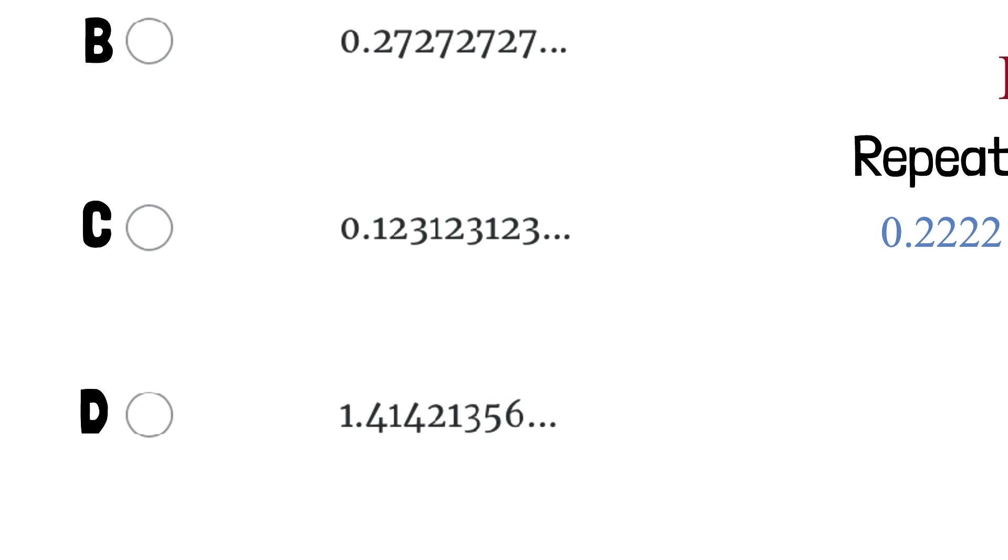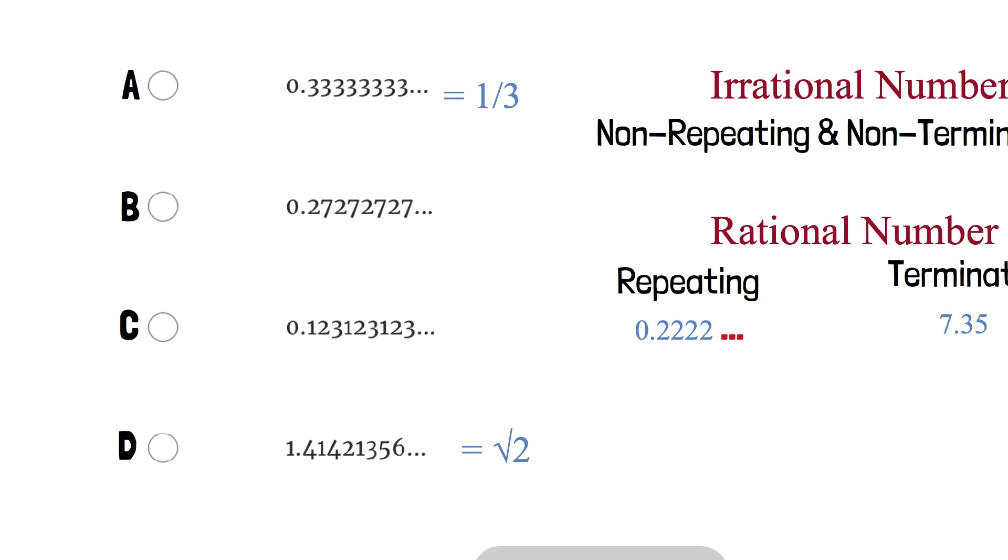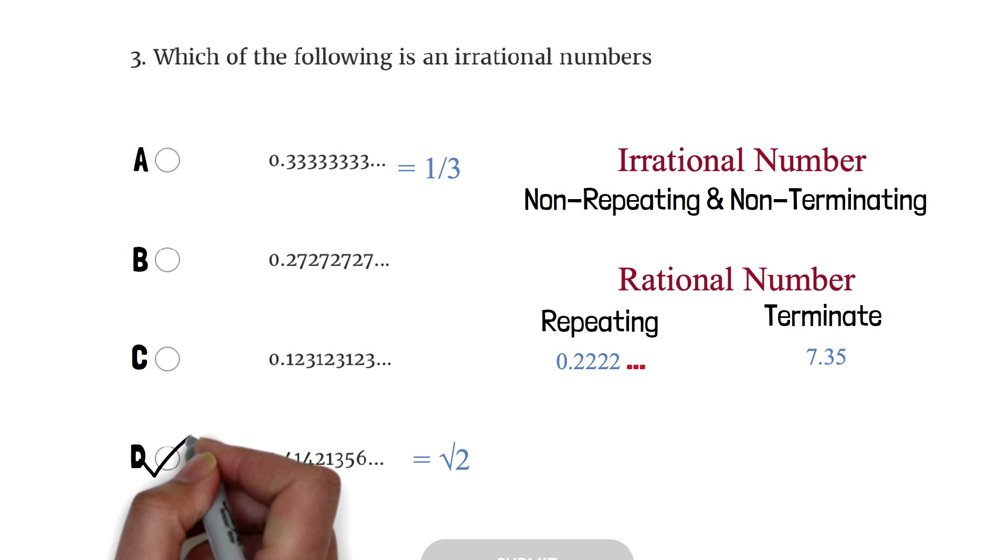For the last one, when we look at the decimals, we have 4, 1, 4, 2, 3, 5, 6, and so on. The numbers are not repeating in any orderly form, so we say it's non-repeating. Also, the numbers continue, so we say it's non-terminating. We can therefore say that the 1.41421356 and so on is an irrational number. This is actually the same as square root of 2, which we already know from the previous question to be irrational. Try it on your calculator. Square root of 2. So this is our answer.